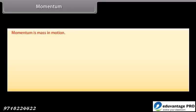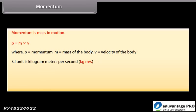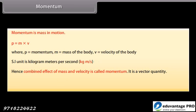Momentum. Momentum is mass in motion. P is equal to M into V, where P is momentum, M is mass of the body, V is velocity of the body. SI unit is kilogram meters per second. Hence combined effect of mass and velocity is called momentum. It is a vector quantity.